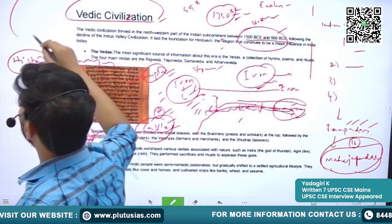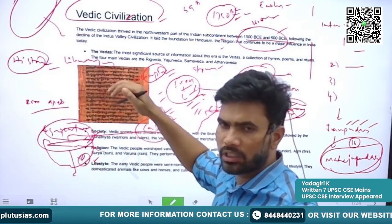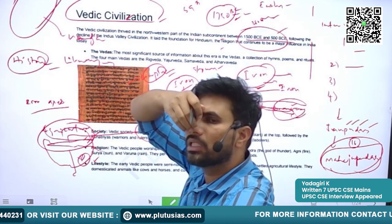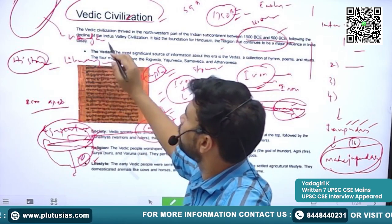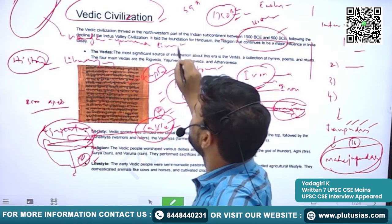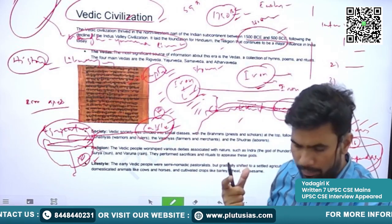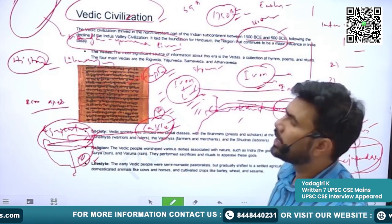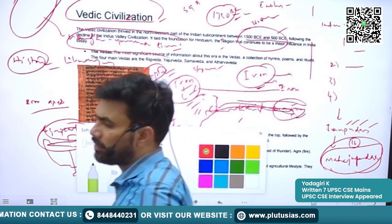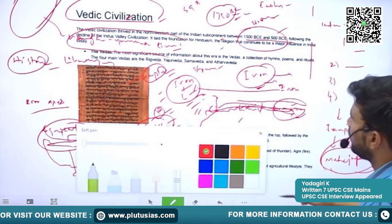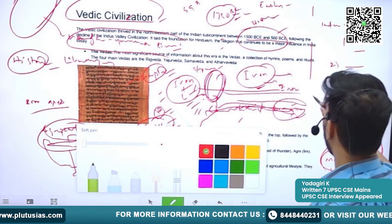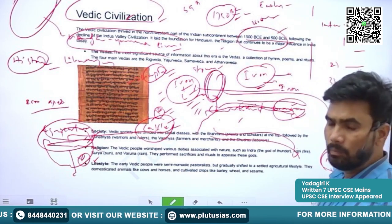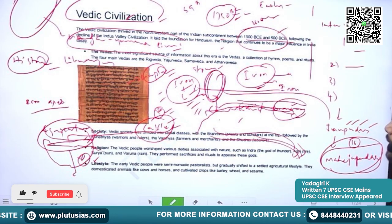The civilization also shifted majorly from the Indus-Saraswati region to the Ganga-Yamuna region. The Indus Valley Civilization was on the banks and tributaries of the Indus River. However, the Vedic Civilization happened in the river valleys of Ganga, Yamuna, and their other tributaries. Gradually it shifted to the banks of Yamuna and Ganges, and as time passed, the civilization moved further eastward.